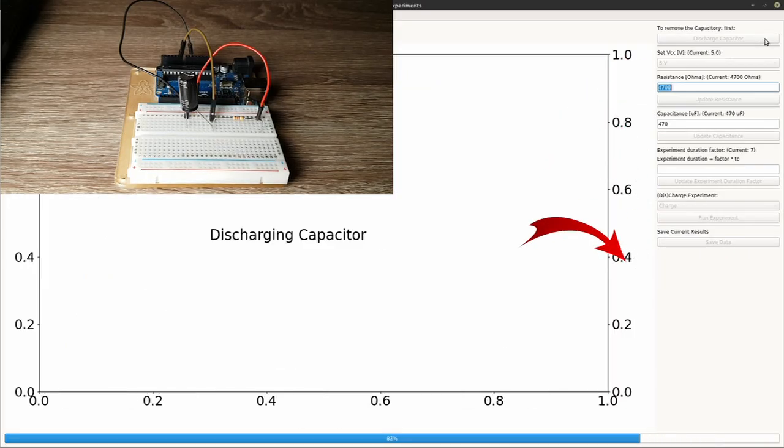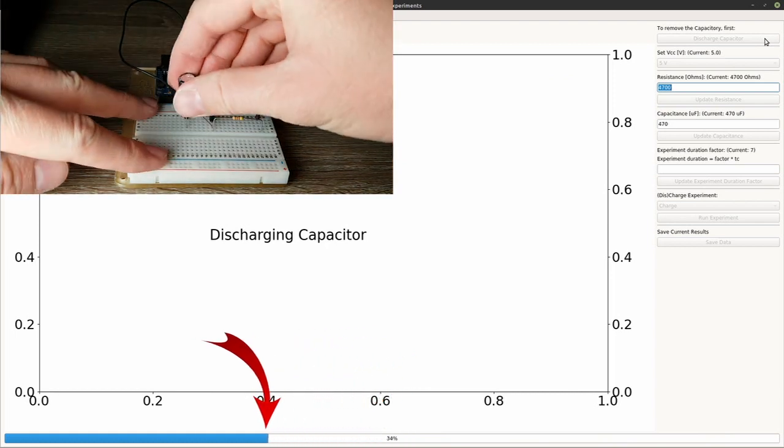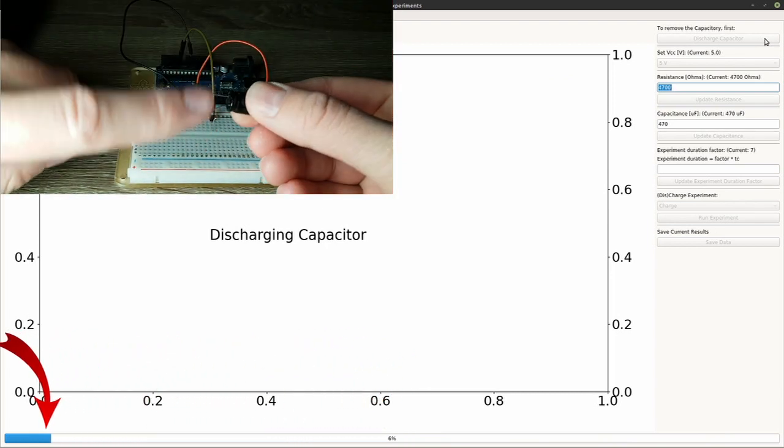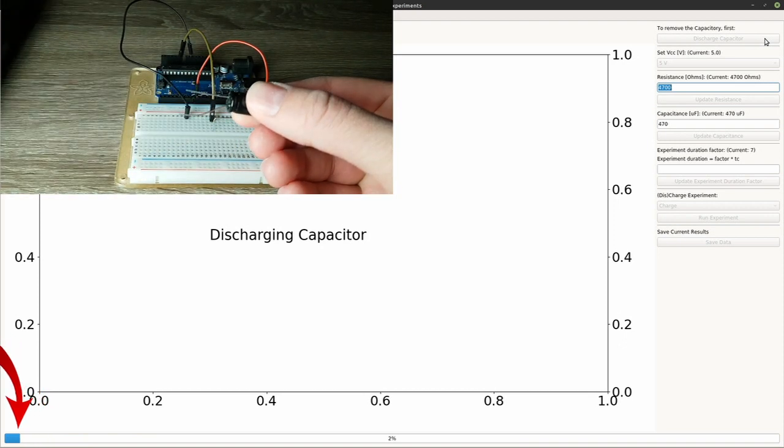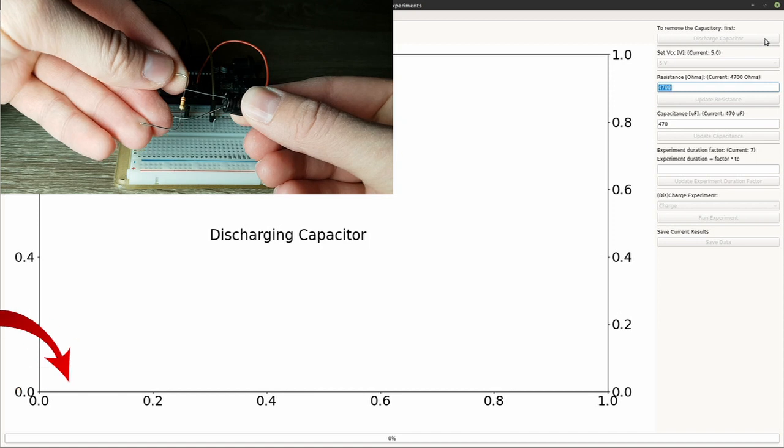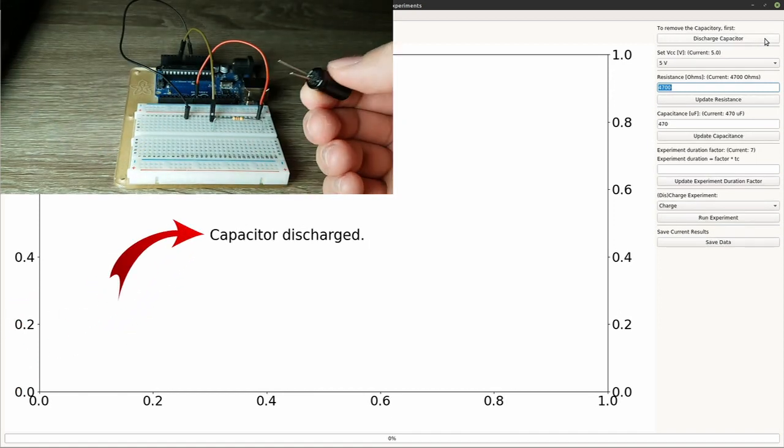Also, capacitors store charge, which means that when you disconnect them from a circuit, they can still hold electrical energy. You should always discharge capacitors before touching their terminals so you and the electronic devices around don't get shocked. For these experiments, you can click discharge capacitor before removing it.